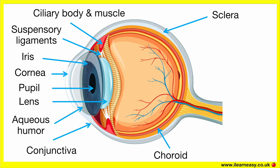Sclera. The sclera is the white part of the eye — a tough outer layer that protects the eye and maintains its shape. Vitreous humour. This is a clear jelly-like substance found in the large back part of the eye, known as the vitreous chamber. It fills the space between the lens and retina, helps maintain eye shape, and allows light to pass through. It is mostly unchanged from birth but can sometimes shrink with age, causing floaters.